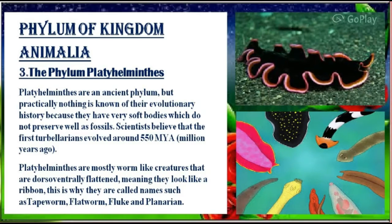First of all we will discuss what Platyhelminthes are. They are an ancient phylum, but practically nothing is known of their evolutionary history because they have very soft bodies which do not preserve well as fossils. Scientists believe the first flatworms evolved around 550 million years ago. Platyhelminthes are mostly worm-like creatures that are dorsoventrally flattened, meaning they look like a ribbon. This is why they are called tapeworms, flatworms, flukes, and planarians.